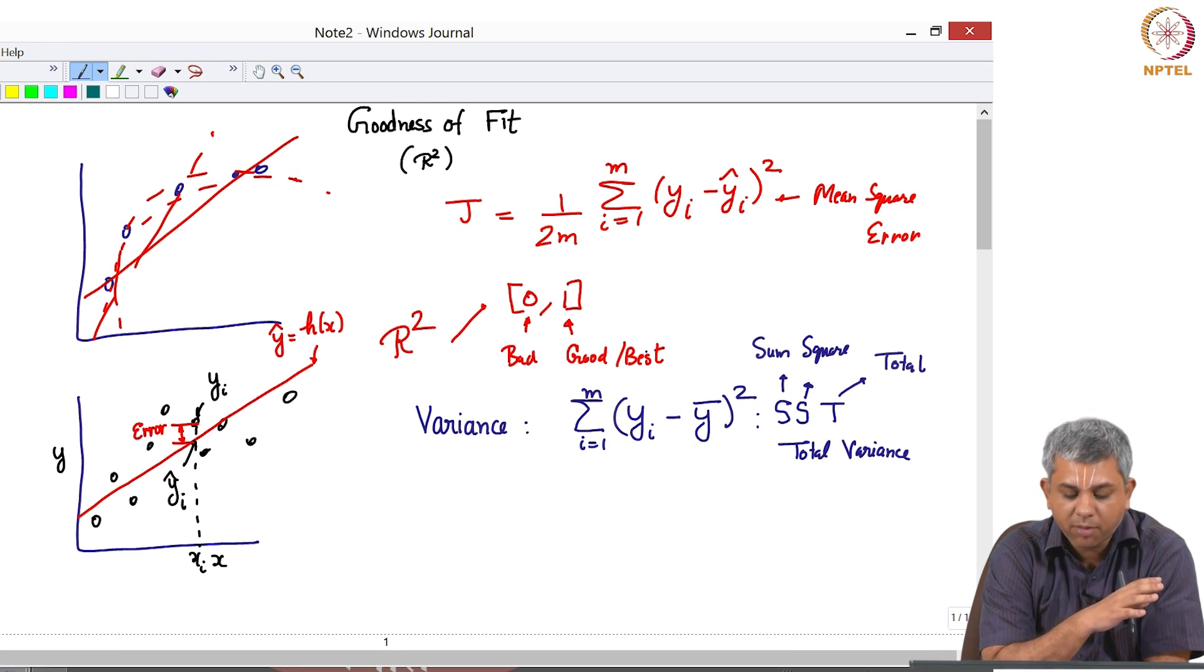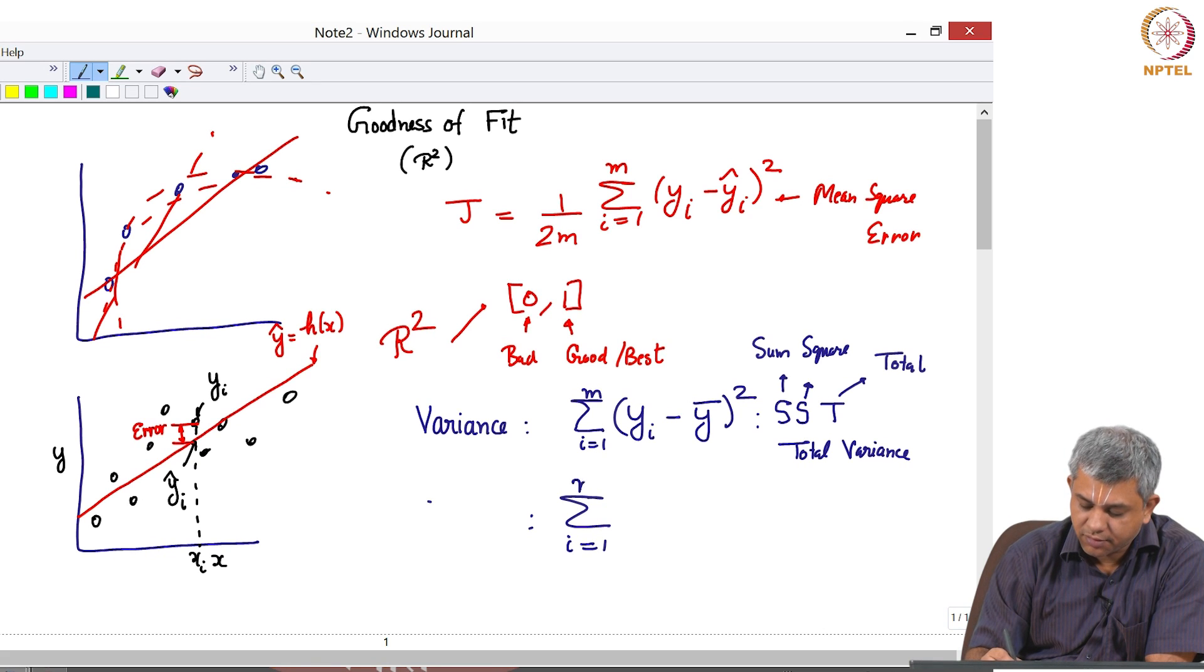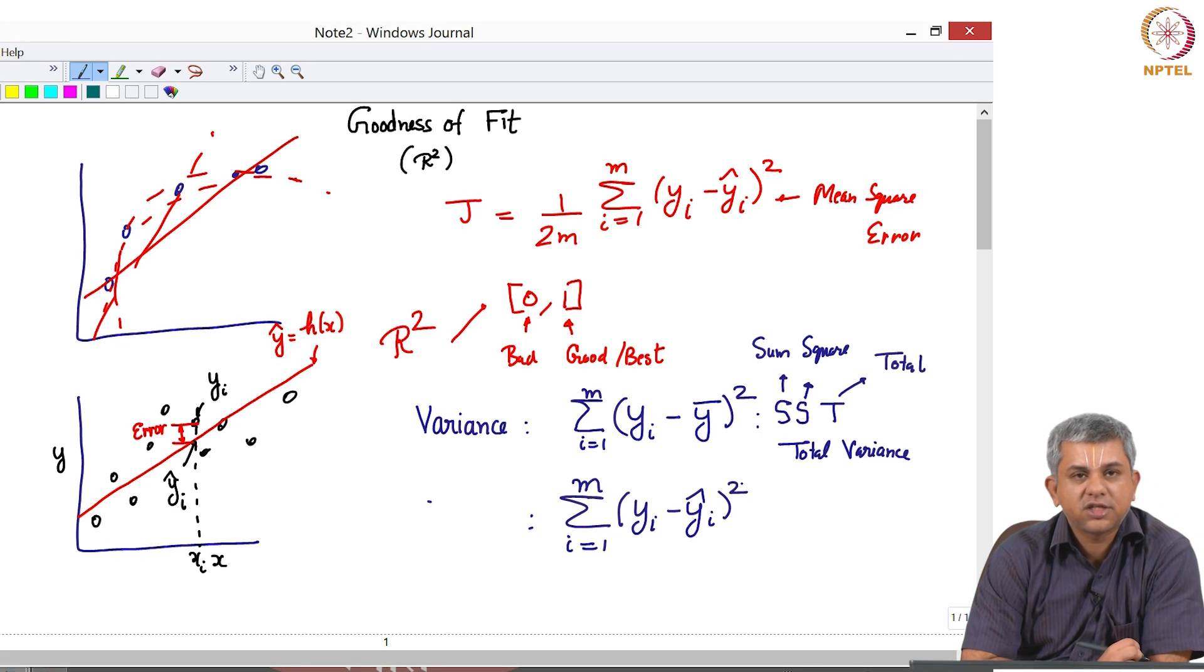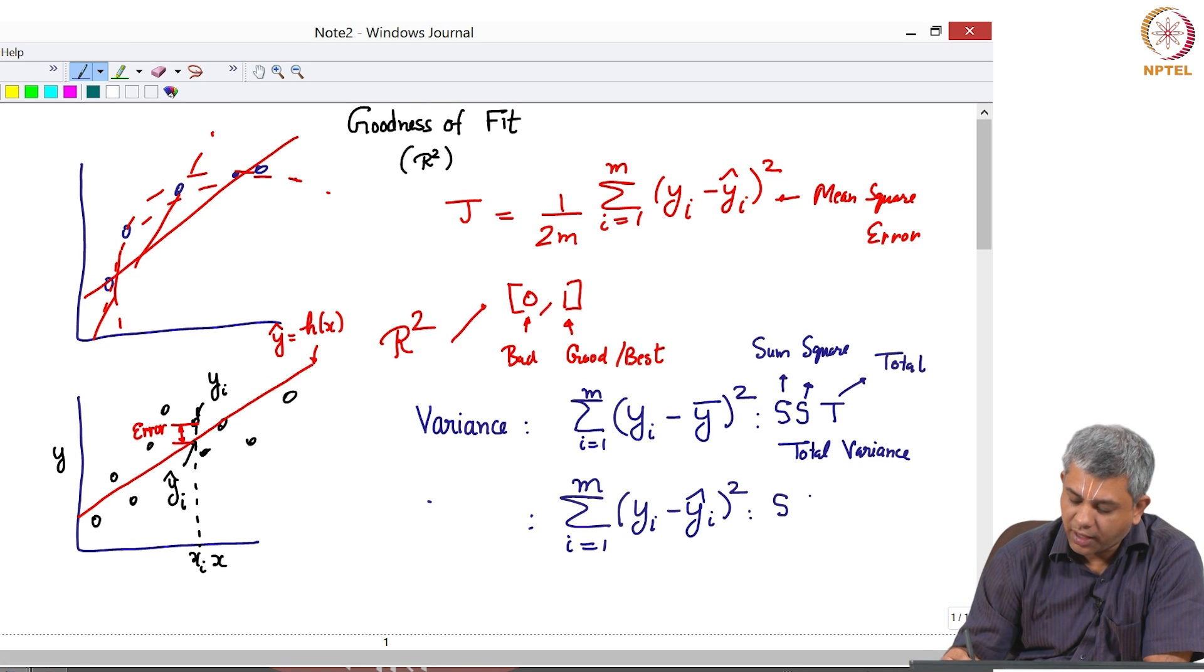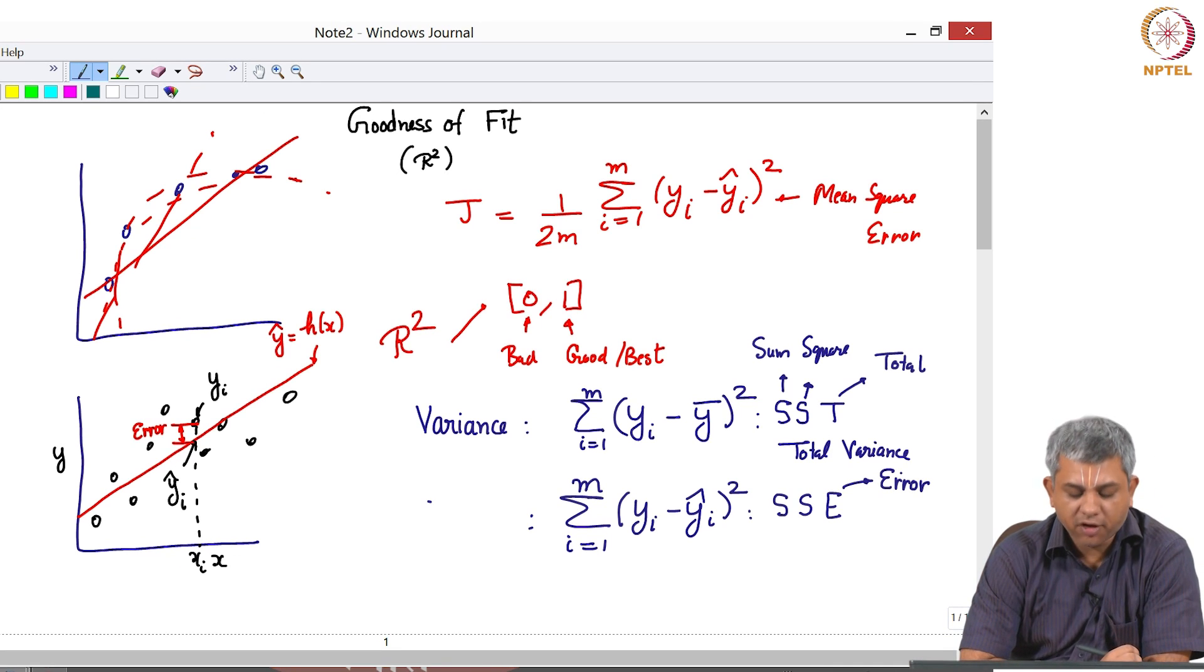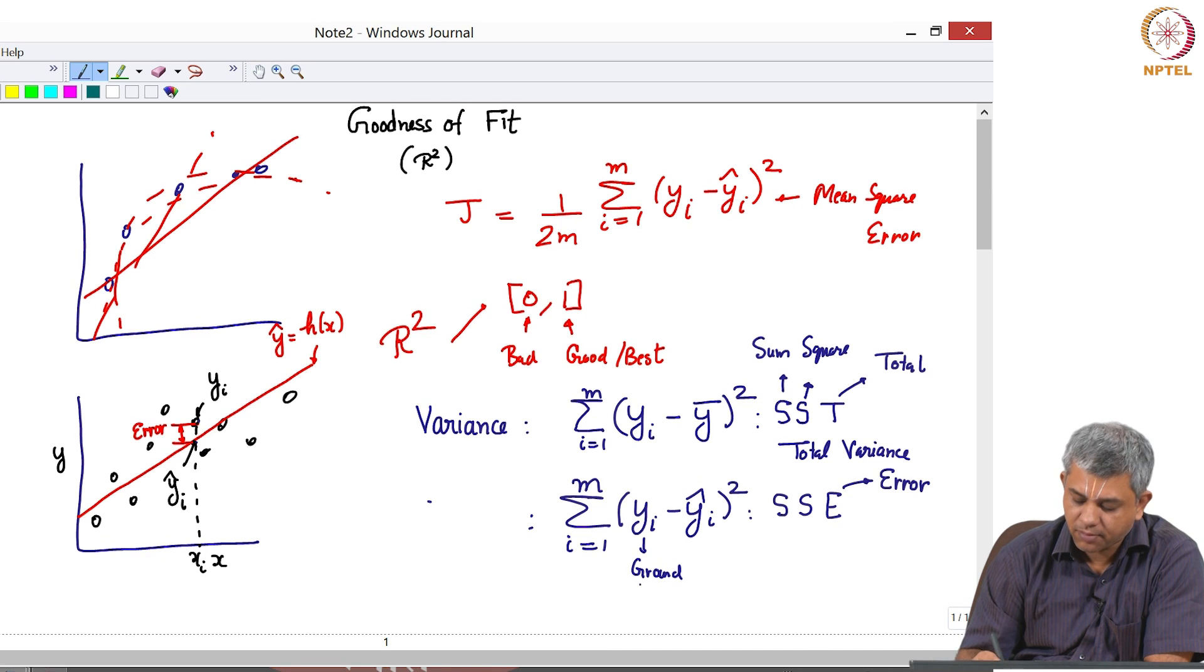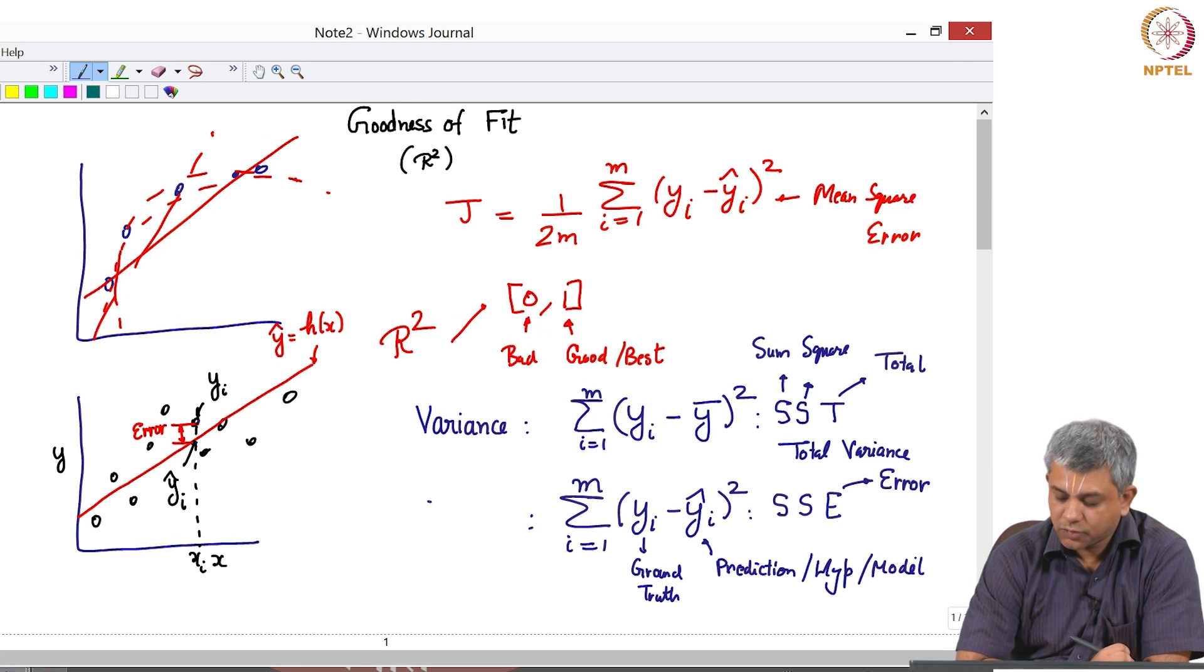This term is known as sum square total, or basically this is the total variance. This means before we even had a model, there was some amount of variation in the data. Now we also have the previous term. Let us look at the second measure of error: yi minus y hat i square. This is our error in prediction and it is known as SSE, where E stands for error.